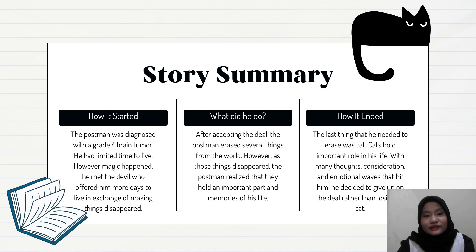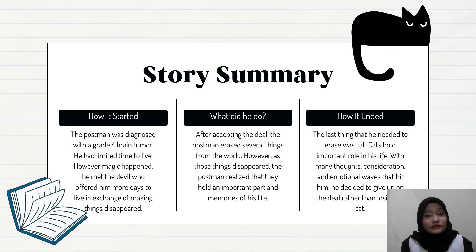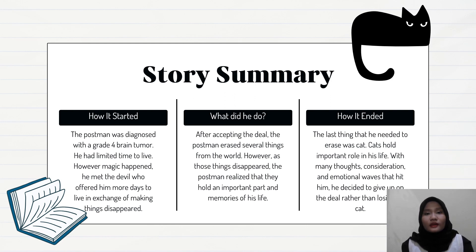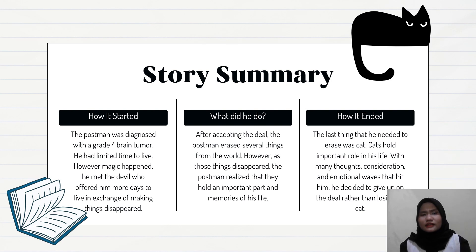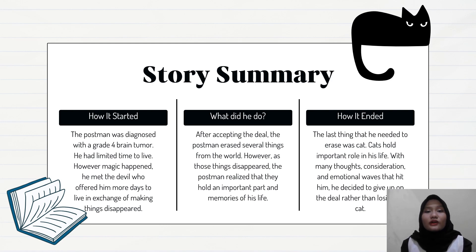Now onto the summary of the story. The novel starts by giving us information about how the postman was diagnosed with a grade four brain tumor and how the doctor said he had limited time to live. But then something magical happened — when he was coming back from the doctor, he met someone who looks exactly like him, and it turns out it is the devil. The devil offered him more days to live in exchange for making things disappear from the world, and the postman accepted the deal, agreeing to make one thing disappear in order to gain another day to live.